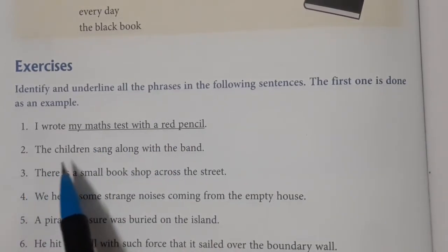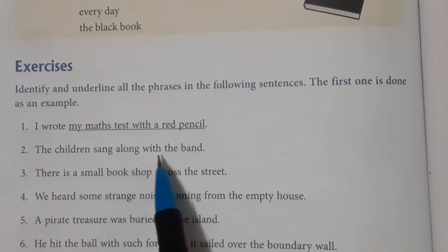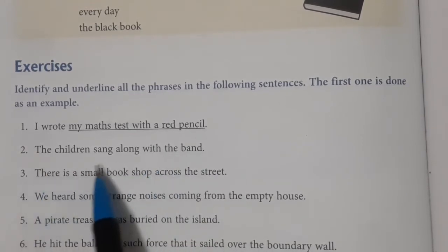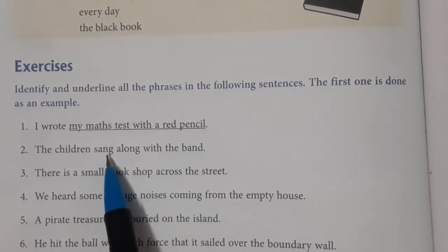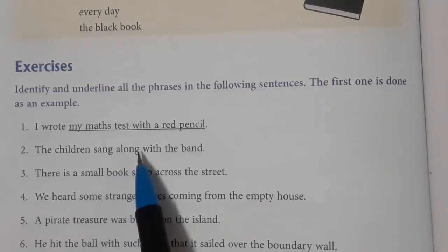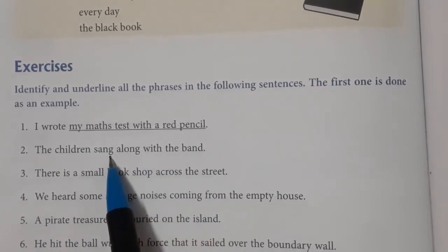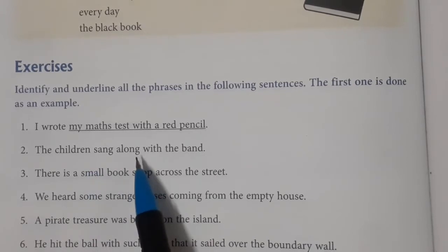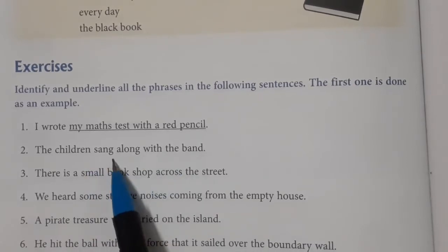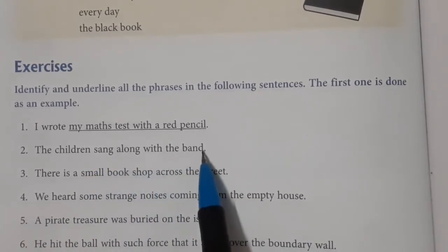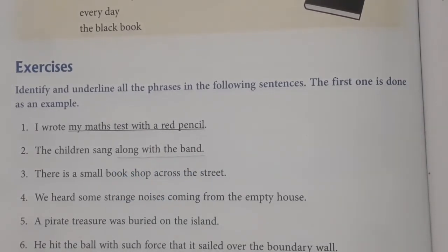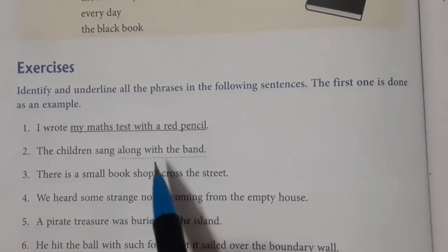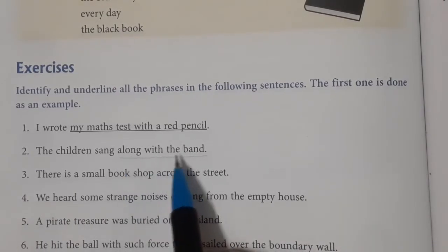The second sentence is: 'The children sang along with the band.' Let us see the verb. 'Sang' is our verb — it is the second form of 'sing.' After the verb, we have 'along with the band,' which means the children sang with the band. So 'along with the band' is the phrase that we underline here.